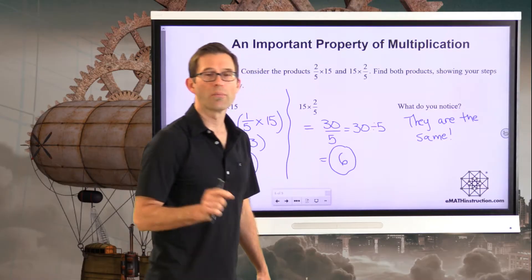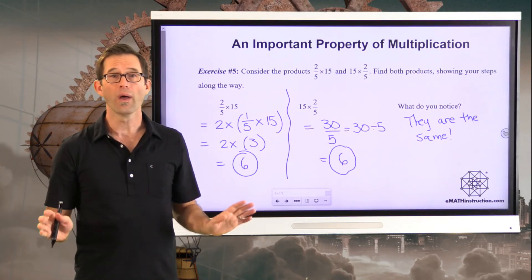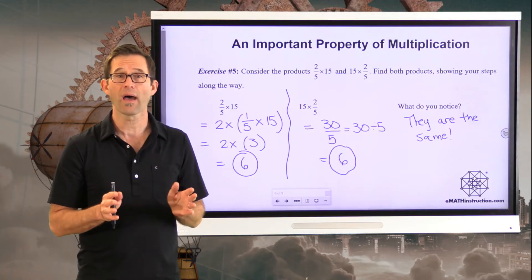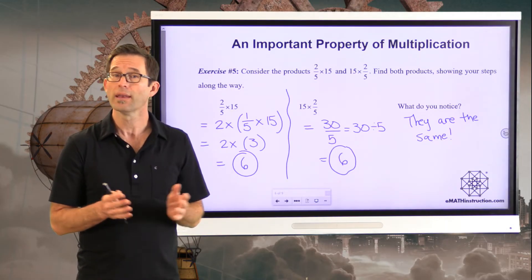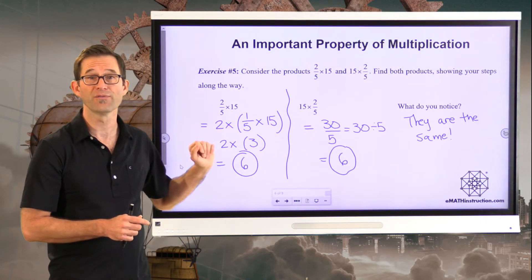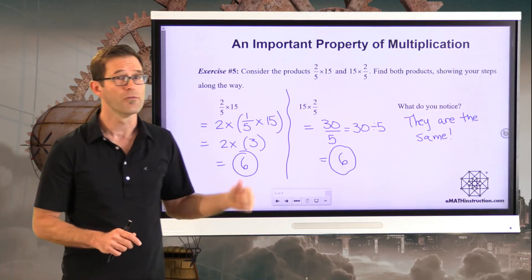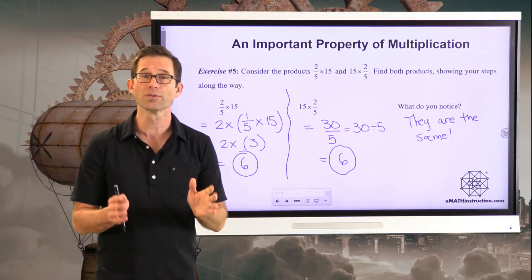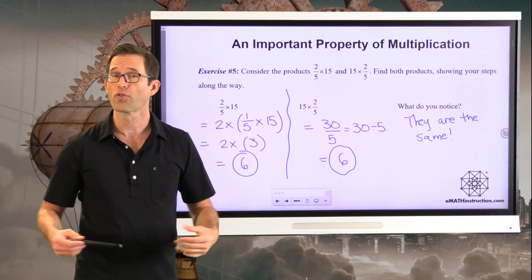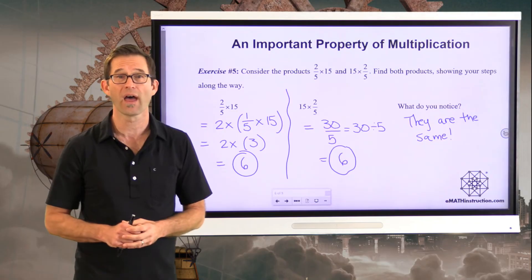This is a remarkable property about multiplication. When you multiply two numbers together — no matter what kind of numbers, whole numbers or fractions — the result is always the same. Multiplication has what's known as the commutative property. Three times four, four times three — same thing. One-half times ten, ten times one-half — same thing. I interpret the two expressions very differently: two-fifths of fifteen versus fifteen of two-fifths — and yet the results are equal.